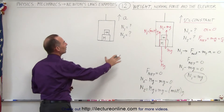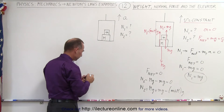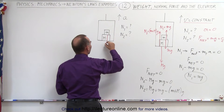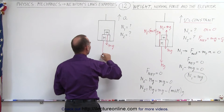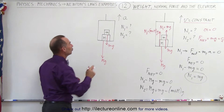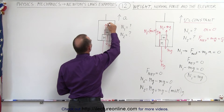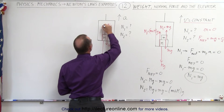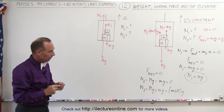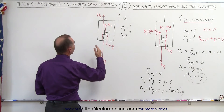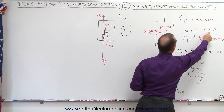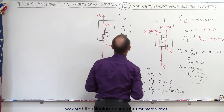But how do things change when the elevator is actually accelerating upward? We draw the forces we know: the small mg and the big mg. But now we're not going to assume we know n1 and n2. There's going to be some normal force n1 pushing back, and some normal force n2 pushing back, but we treat them as unknowns. Now we realize that a is not going to equal zero — a now has a certain value.